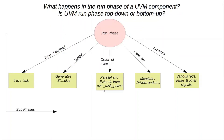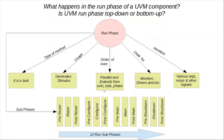Lastly, there are 12 run sub-phases. These are meant to execute sequences from the environment or the test. The order of these sub-phases are reset, config, main and shutdown.